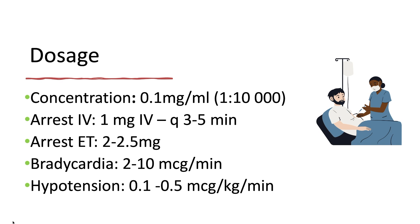For the endotracheal route, which we don't use in the ACLS stations, we will use 2 to 2.5 mg diluted in 10 ml of normal saline, as the uptake of epinephrine down the ET tube is not the most reliable. For symptomatic bradycardia, we can start an infusion at 2 to 10 mcg per minute and titrate against the effect. For a continuous infusion, the initial rate is 0.1 to 0.5 mcg per kg per minute.